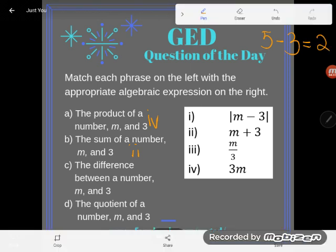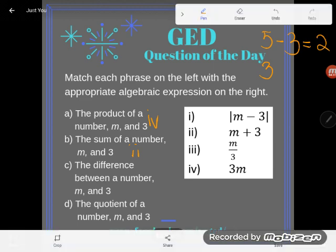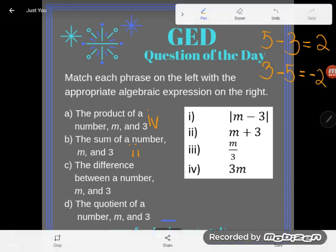However, some of us have made the mistake before where we've had only $3 in our account and we spend 5, we spend more than what we have. In that case, I would end up not at positive 2, but at negative 2, $2 in the hole, owing $2 in the bank.